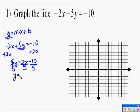So the 5s cancel out, and you'll have y equals, well, we're going to have 2 over 5x minus, well, 10 divided by 5 is 2, so 2 fifths x minus 2.